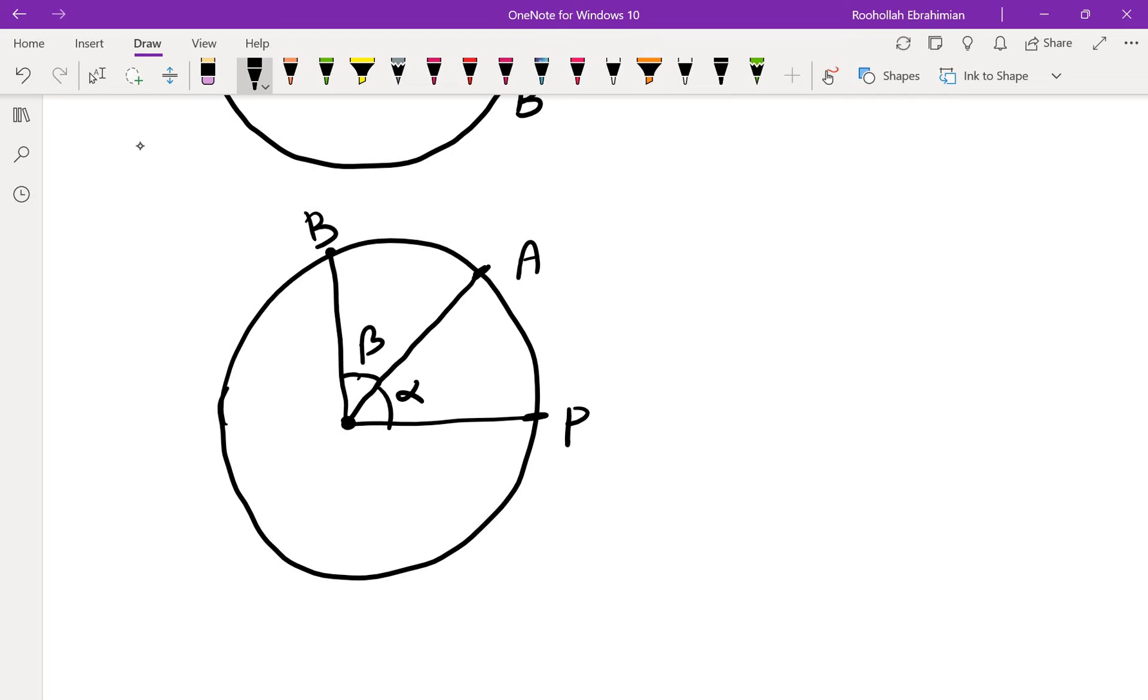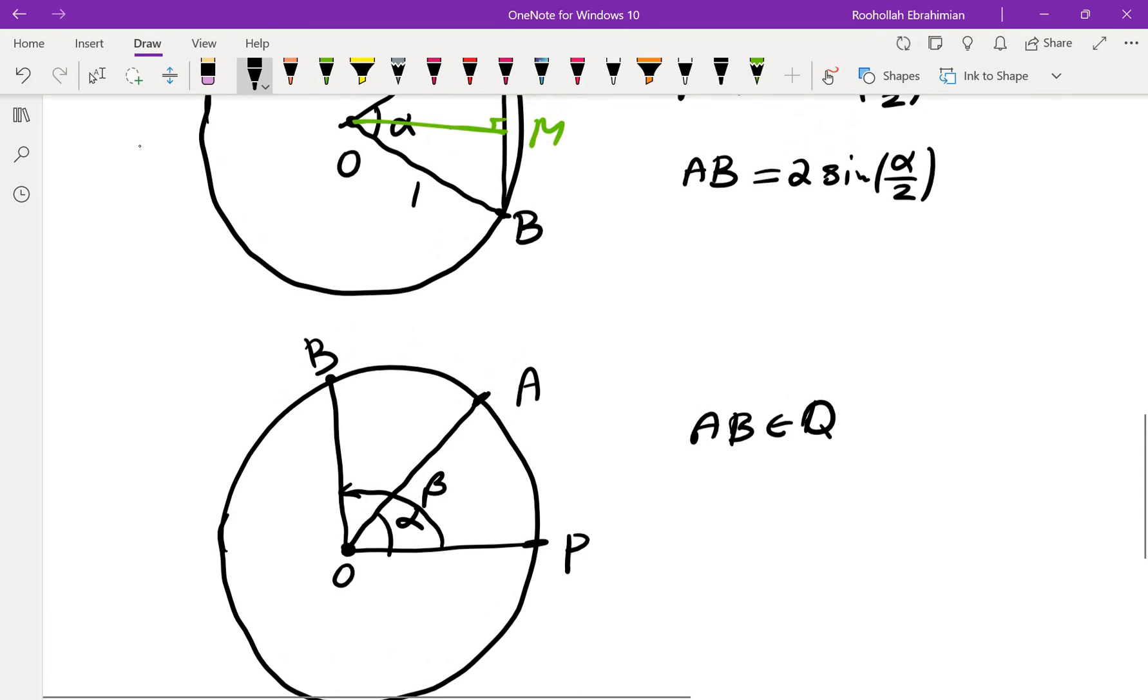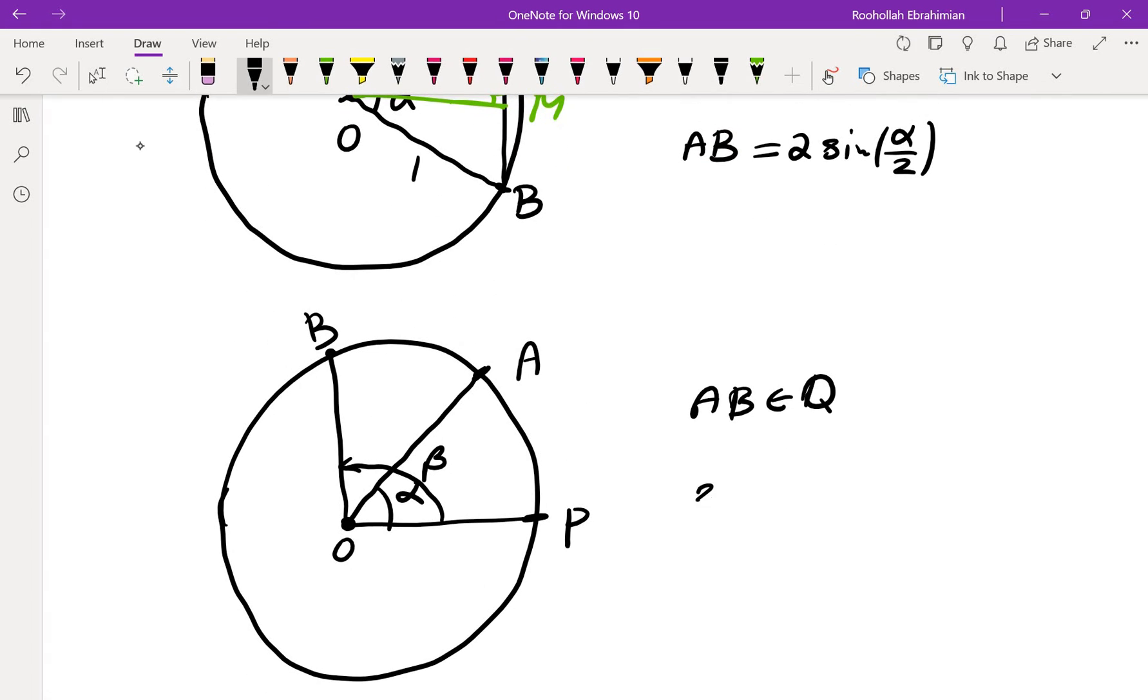In order for AB to be rational, we need, let's say I measure all the angles from OP. So I'll call this one beta. What I need for AB to be rational is sine of beta minus alpha over 2 to be rational.